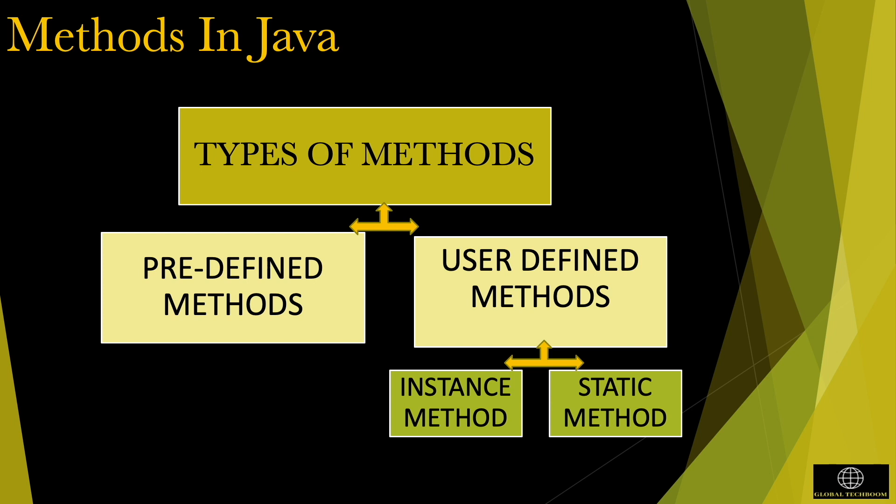There are instance methods and static methods. Instance methods represent behavior of the objects. They are linked with an object. Static method is also known as class method. It is used to implement the behavior of the class itself. Static methods load into the memory during class loading and before object creation. To call a static method, we use dot operator with the class name.